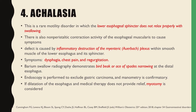Next, we have Achalasia. This is a rare motility disorder in which the lower esophageal sphincter does not relax properly with swallowing. There is also non-peristaltic contraction activity of the esophageal muscularis. The defect is mainly caused by inflammatory destruction of the myenteric or Auerbach plexus within smooth muscle of the lower esophagus and its sphincter. Symptoms include dysphagia, chest pain, and regurgitation. Barium swallow radiography demonstrates a bird beak or ace-of-spades narrowing at the distal esophagus. Endoscopy is performed to exclude gastric carcinoma, and manometry is confirmatory. If dilatation of the esophagus and medical therapy do not provide relief, then myotomy can be performed.